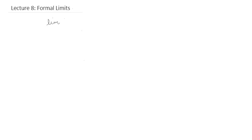In this video we're going to talk about a concept that many people find very challenging to understand — the concept of a formal limit. So far we've talked about limits in an informal way. What I'm basically trying to say is that if we have a function like this, all we had to do up till now was simply plug in the value of 4 inside the function and we'd end up with a limit, which would be 17 in this case. But how do we actually know this? In order to prove this, we need to understand a formal argument.